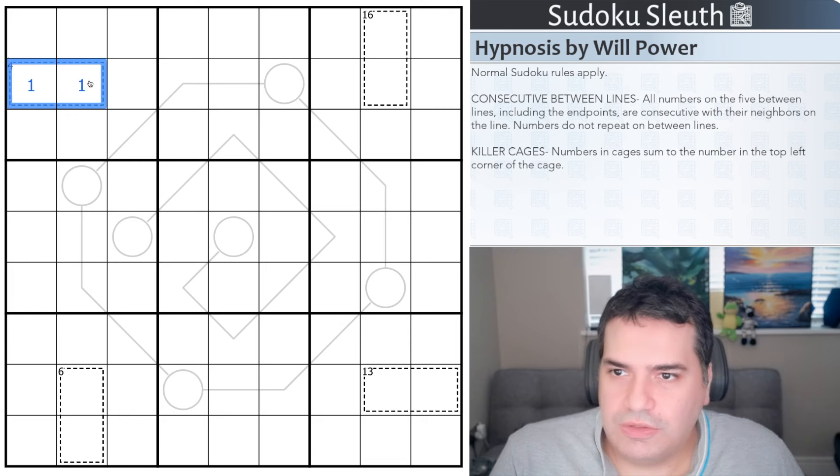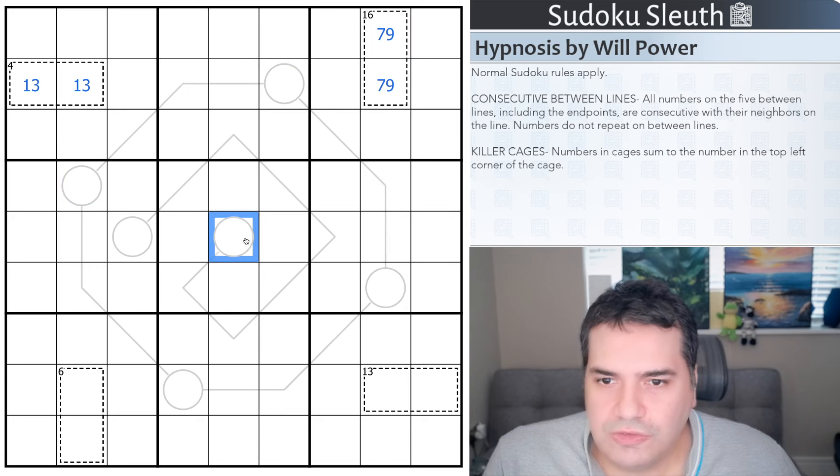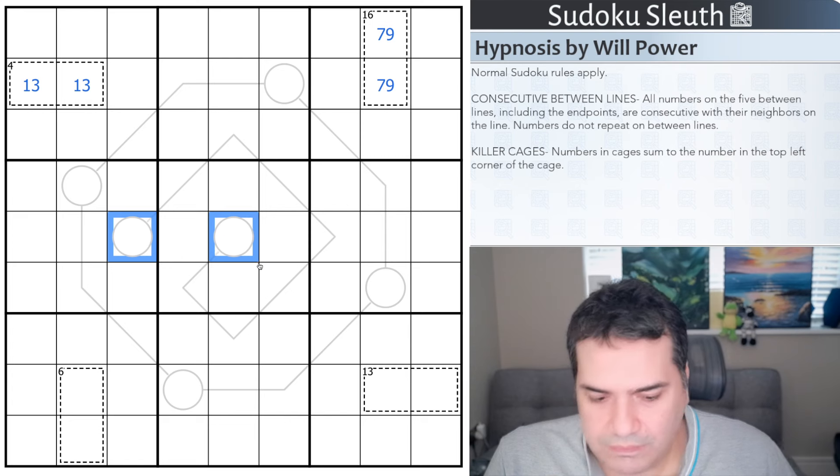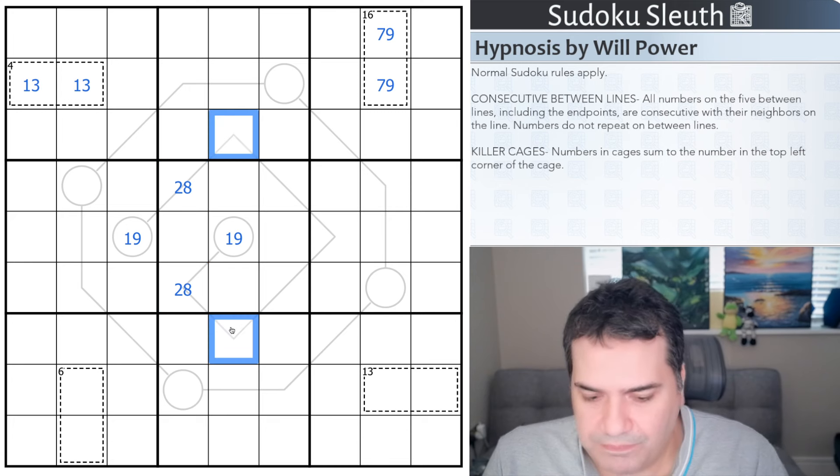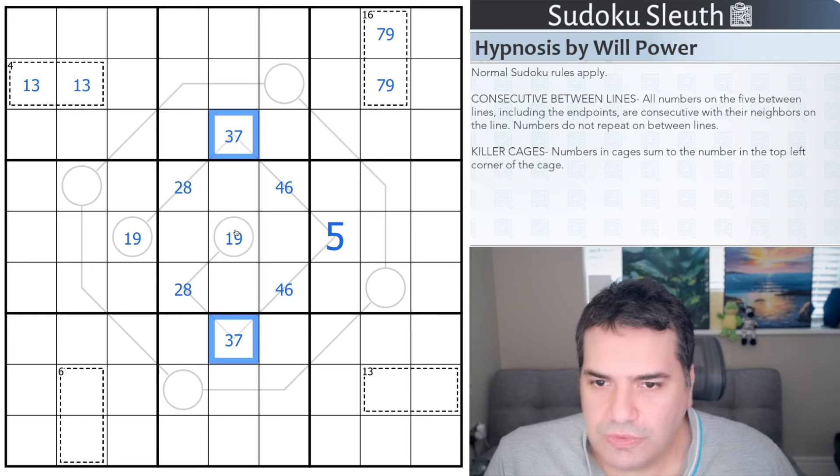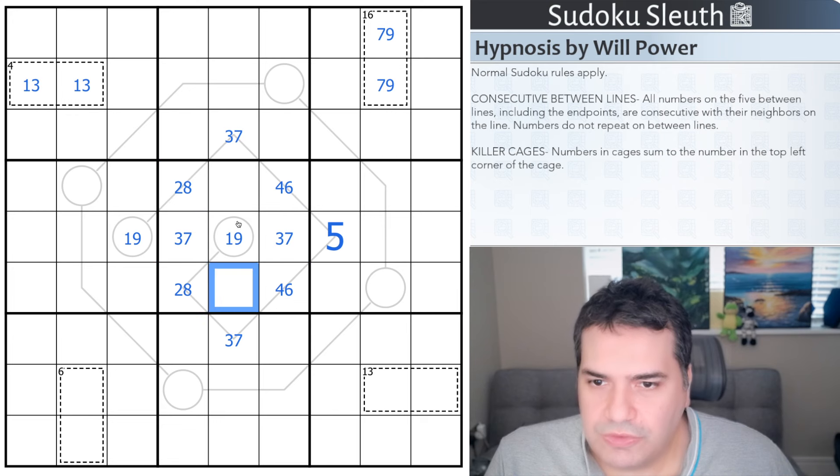So there's a few cages like the four and sixteen where they're forced, but that's not hugely helpful. What I'm more interested in is what's happening in these consecutive between lines. In particular, that's a nine cell between line, so we know it has to go from one and nine. The next two cells have to be two, eight. The next two cells have to be three, seven. The next two cells would have to be four and six. And then the middle will always be a five.